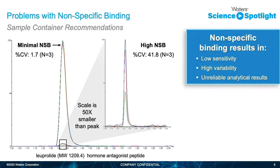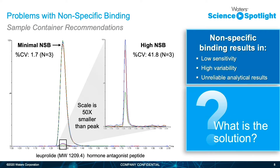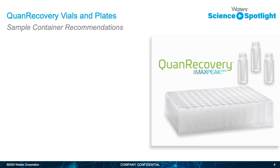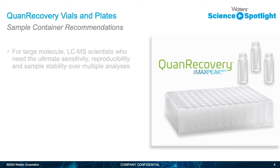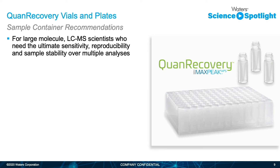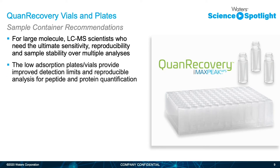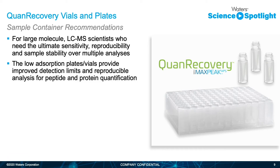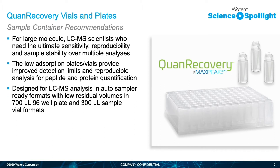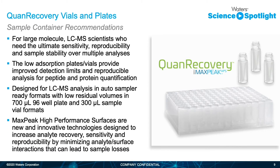So how do we take proper care of our samples to mitigate nonspecific binding when they could perhaps be living in the LC for long injection cycle times — overnight or even over a weekend? Quan Recovery with Max Peak High Performance Surfaces, otherwise HPS, is a new brand of plates and vials designed to protect your samples from nonspecific binding. With a 700 microliter 96-well plate and a 300 microliter low residual volume vial, your samples are protected regardless of your sample volume or sample size. Quan Recovery will help protect those samples.